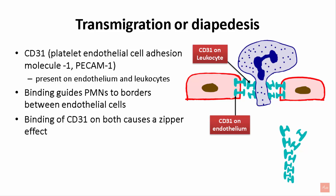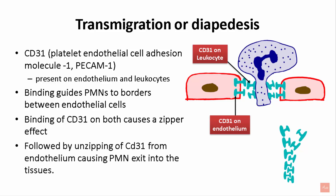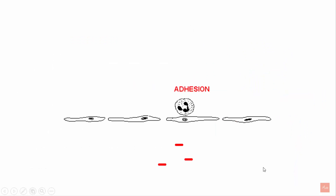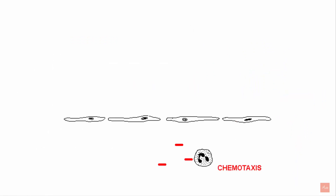The binding of CD31 molecules on both the neutrophils and the endothelium causes a zipper effect. This is followed by unzipping of the CD31 molecules on the endothelium, giving the PMN an opportunity to exit the vessels. So the full sequence is: margination, rolling, adhesion, diapedesis, and finally chemotaxis and phagocytosis.